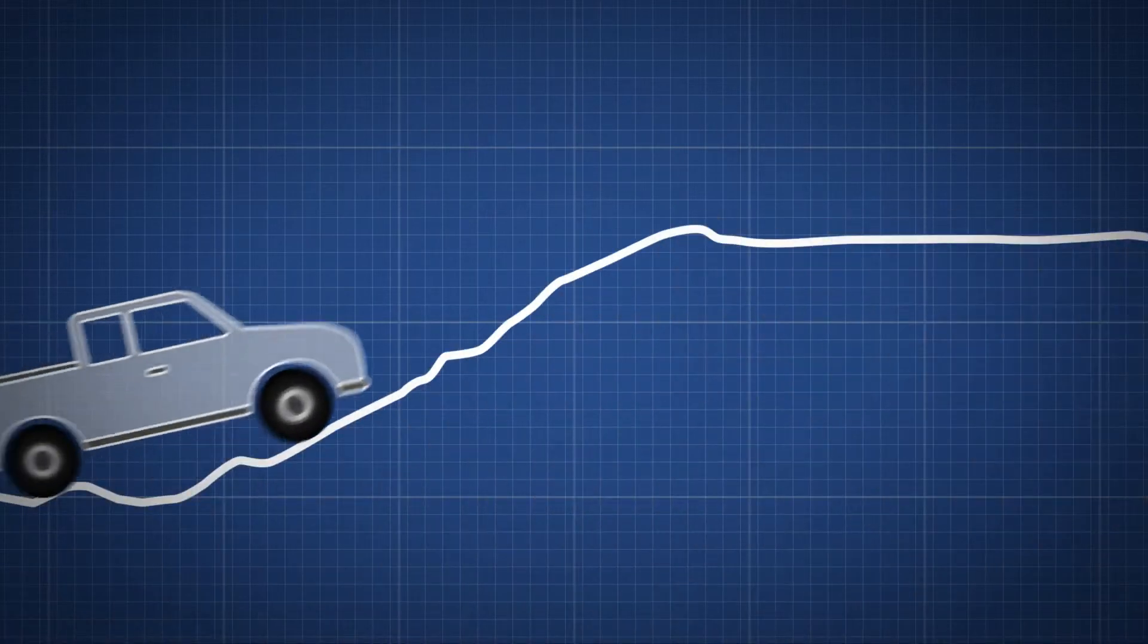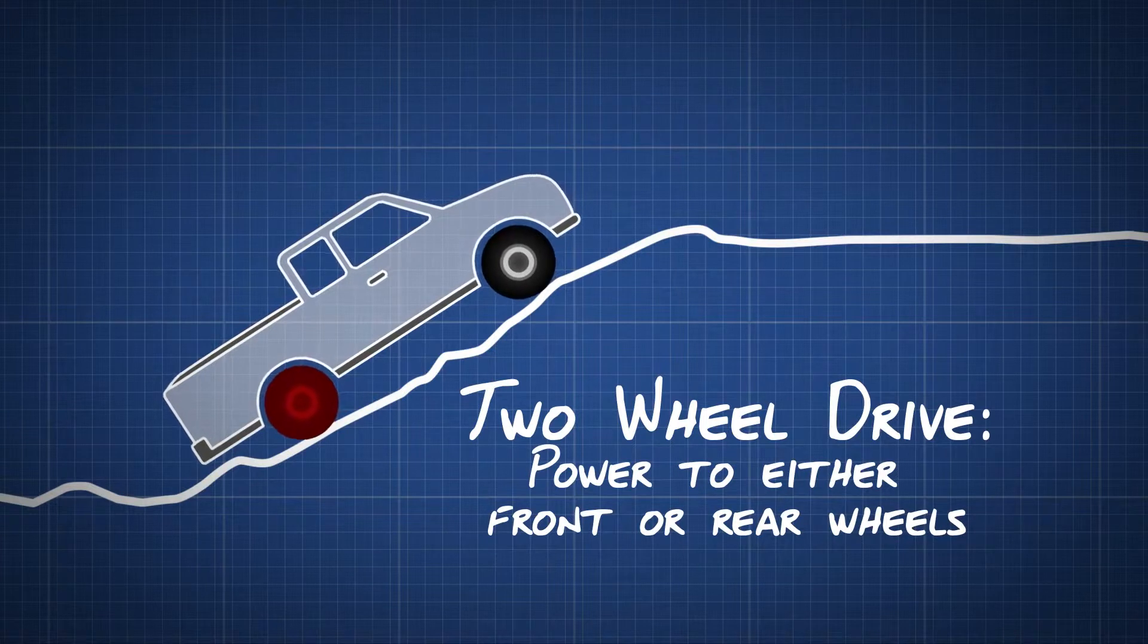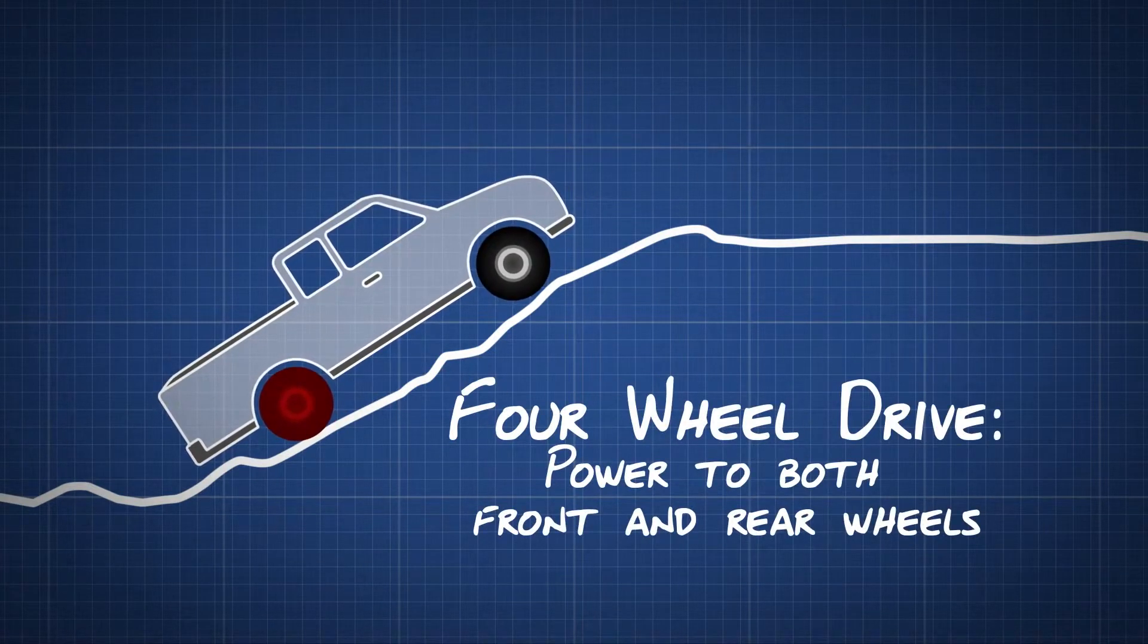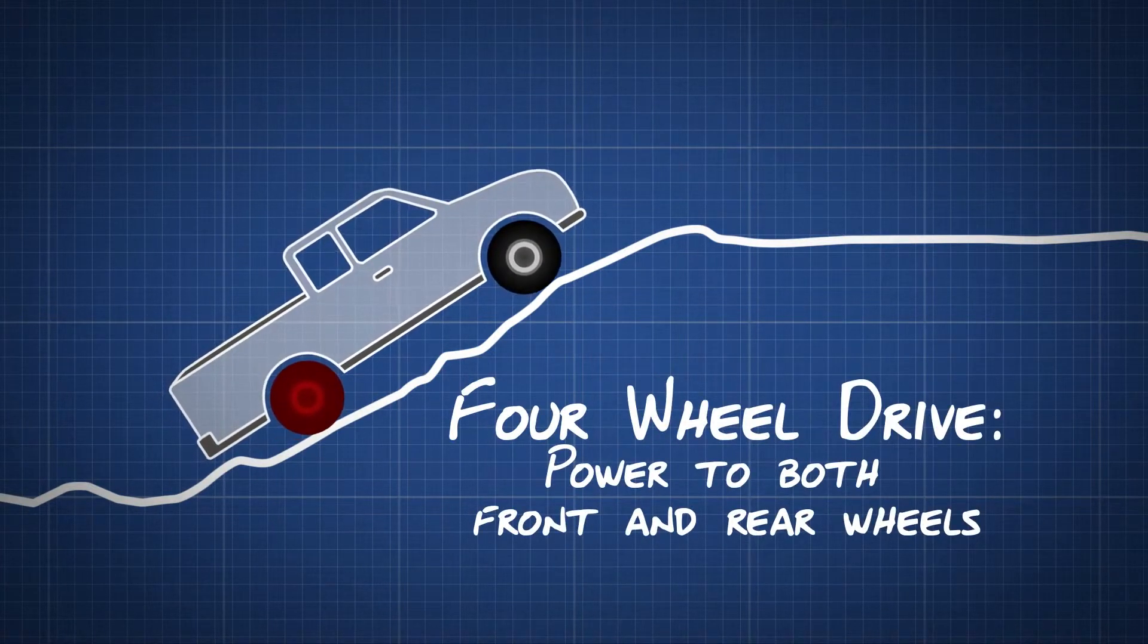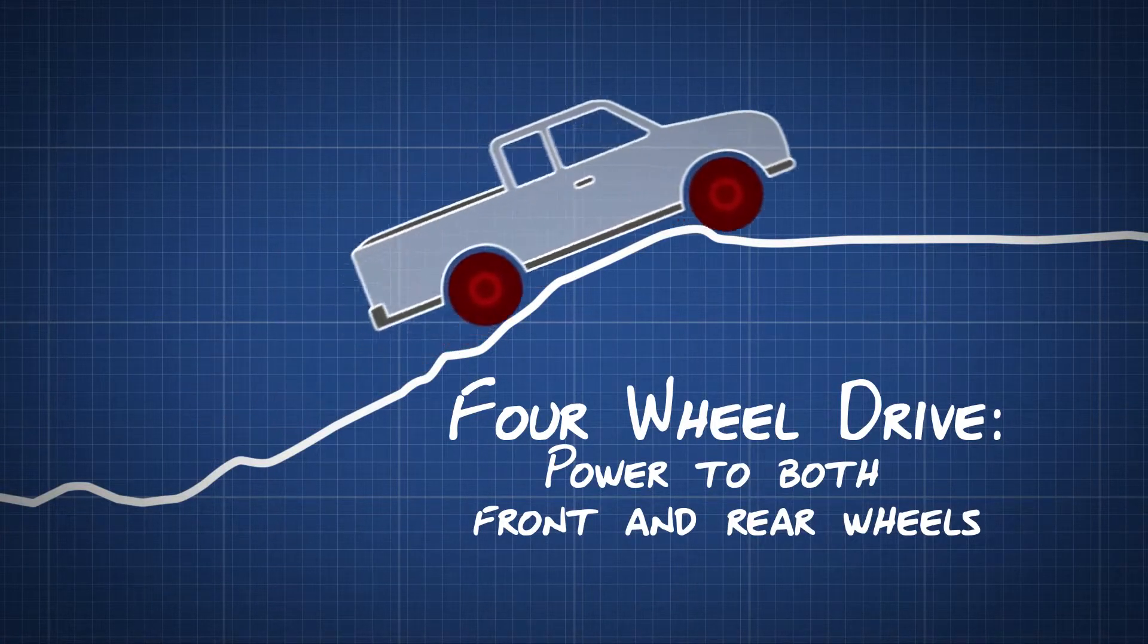Unlike a two-wheel drive car where the power goes either to the front or rear wheels, four-wheel drive works by sending power from the engine to all four wheels. This means that all the wheels are powered which gives the vehicle more stability and power.